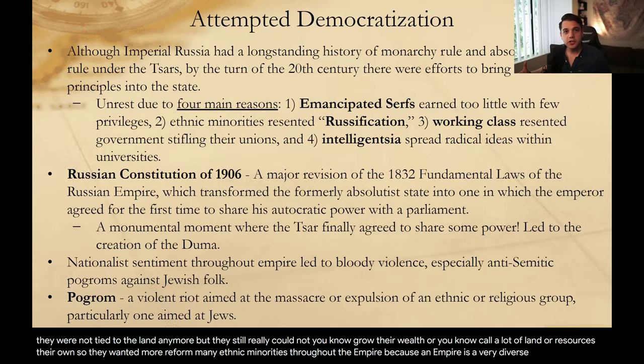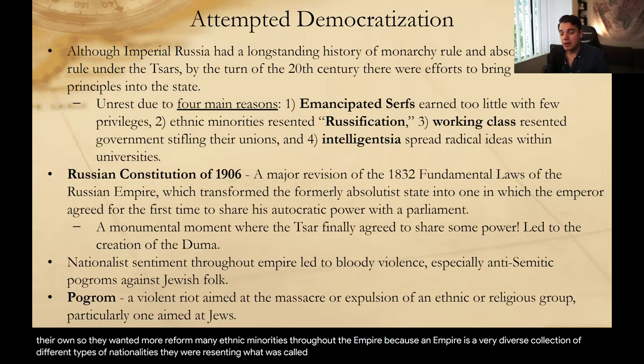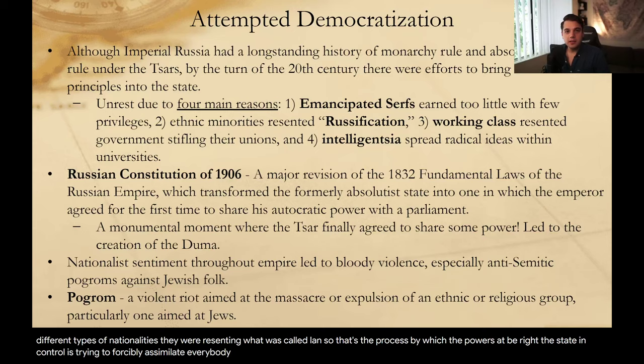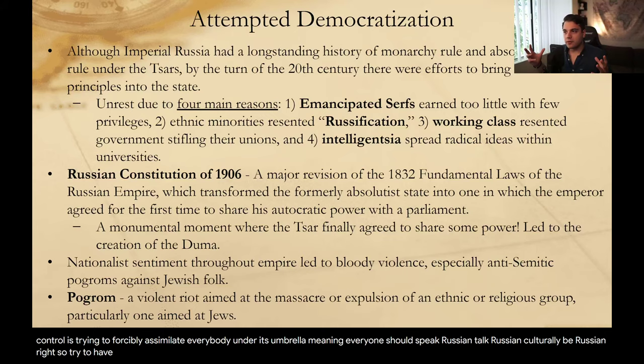Many ethnic minorities throughout the empire were resenting what was called Russification — the process by which the powers that be, the state in control, were trying to forcibly assimilate everybody under its umbrella. Meaning everyone should speak Russian, talk Russian, culturally be Russian. It tried to have everyone under that same national mindset.